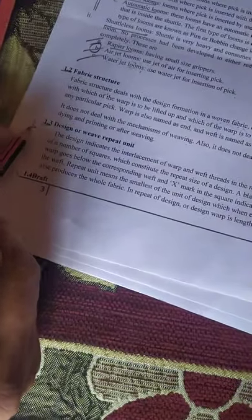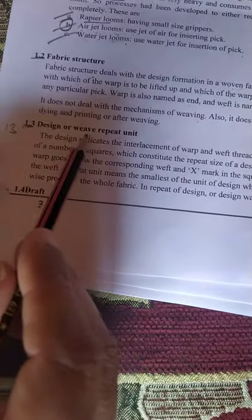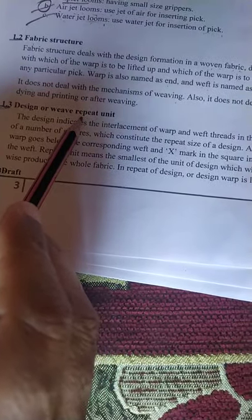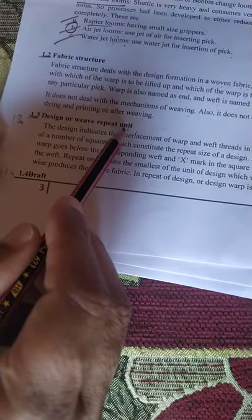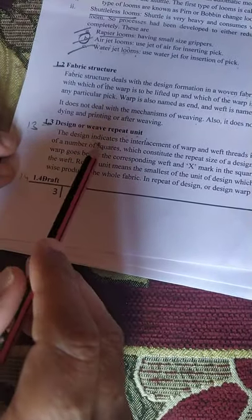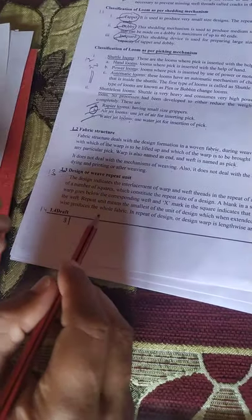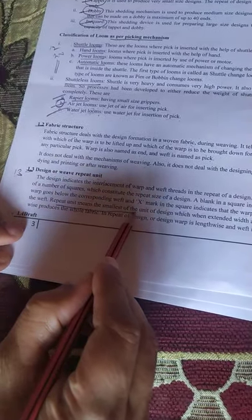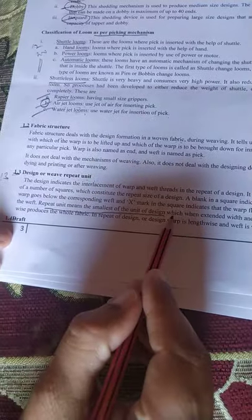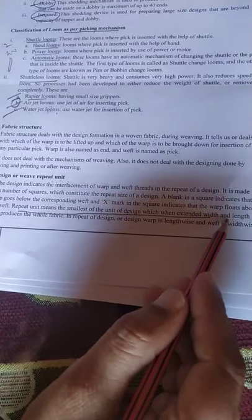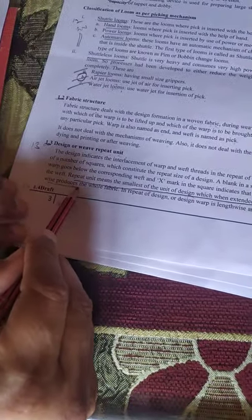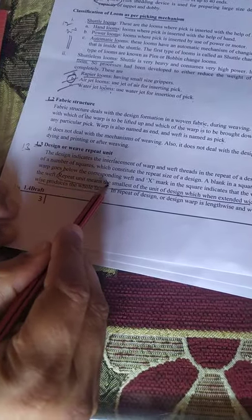What is weave repeat unit or repeat unit of a design? It is the smallest unit of design which when extended widthwise or lengthwise makes the complete fabric.